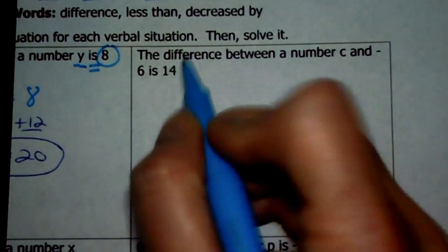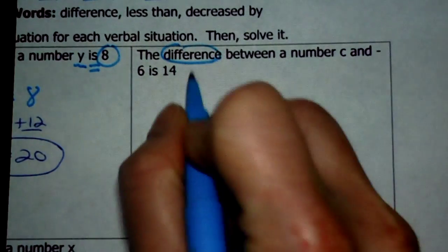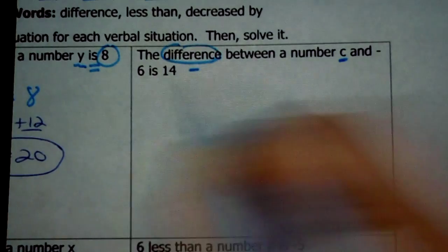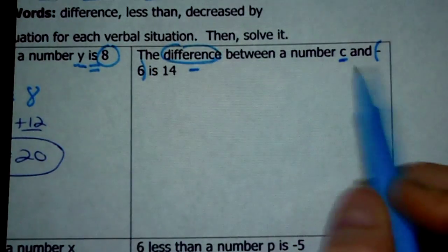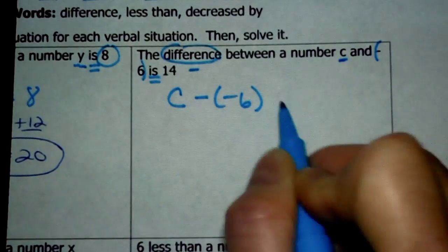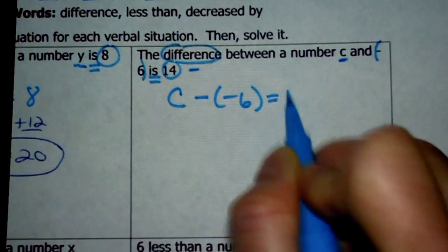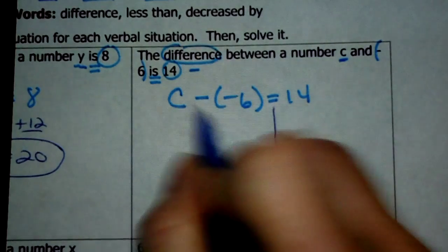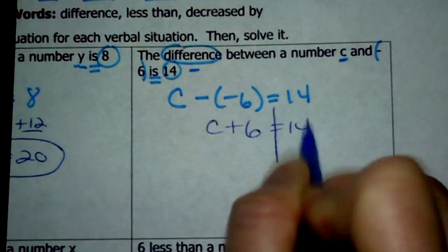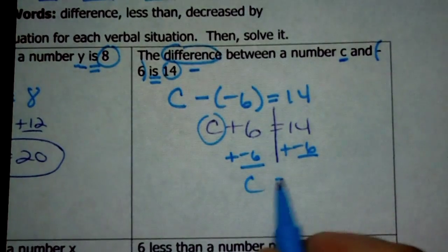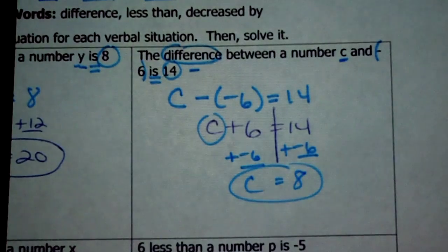This one says: the difference between a number c and negative 6 is 14. Difference is a key subtraction word, so I want c minus negative 6. The word is gives the equal sign, and 14 follows. The equation is c minus negative 6 equals 14. Keep-change-change: c minus negative 6 is the same as c plus 6 equals 14. Here's c — I need to get rid of the 6 being added, so add a negative 6 to both sides. 14 plus negative 6 is 8. So c equals 8.